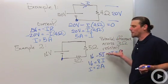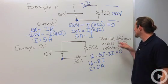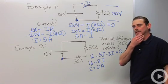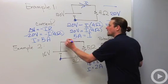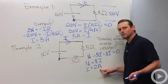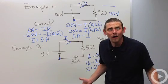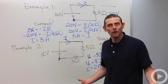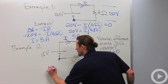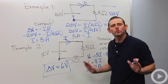But that's not what the problem asked for. The problem did not ask for the current. It wants to know what's the potential difference across the 3 ohm resistor. Geez, I don't know. Well, now I got the current, 2 amps. Potential difference across any resistor is given by Ohm's law, delta V equals IR. So 2 times 3, 6 volts.